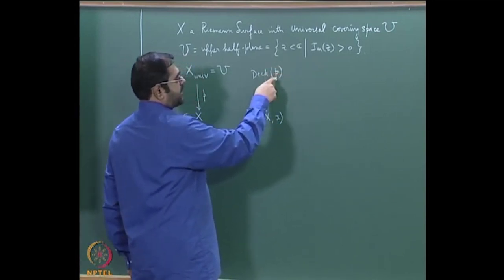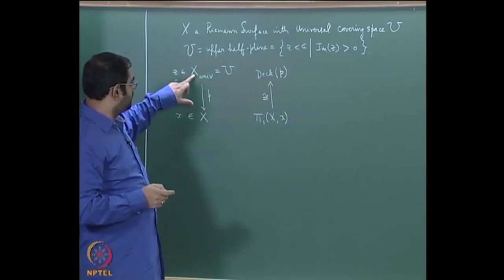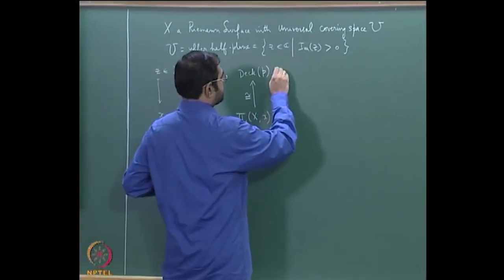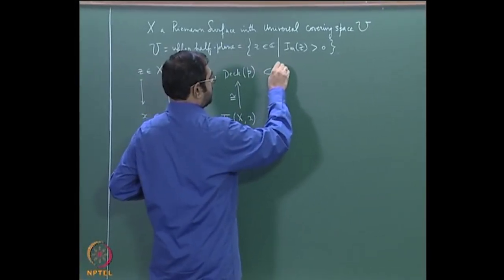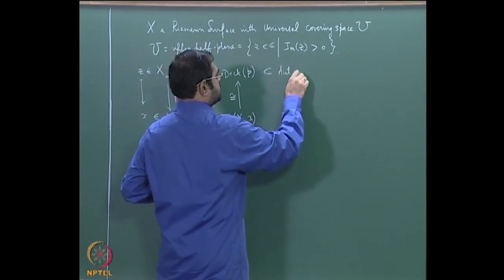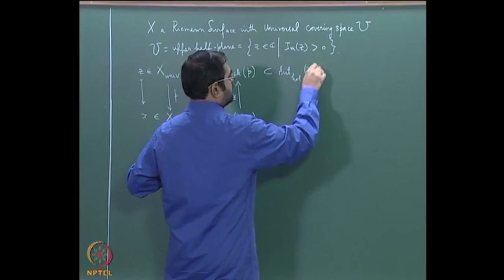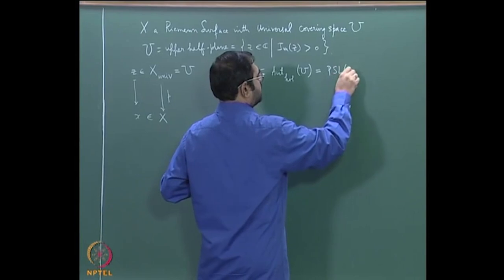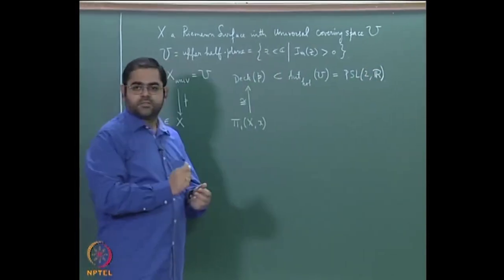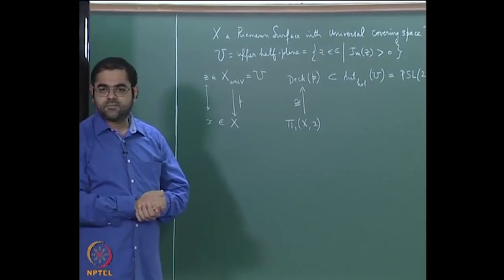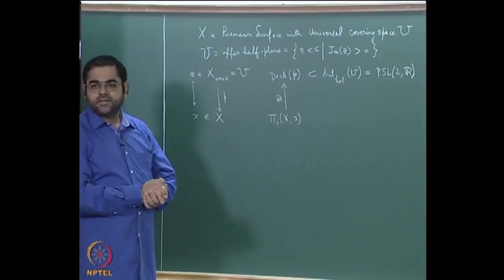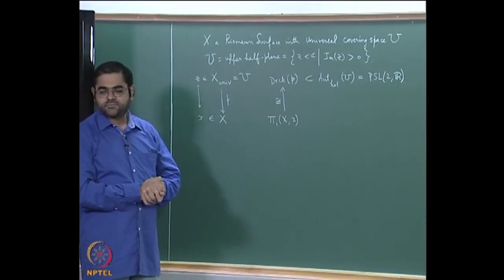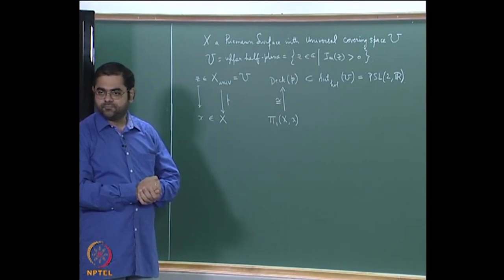The deck transformation group is a subgroup of the holomorphic automorphisms of U, which is identified with PSL(2,ℝ) — Möbius transformations of the form z ↦ (az+b)/(cz+d) with a, b, c, d real and ad−bc = 1.